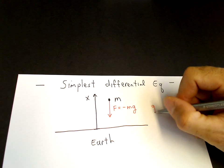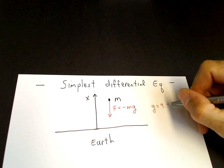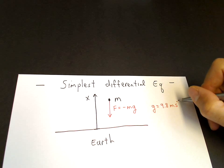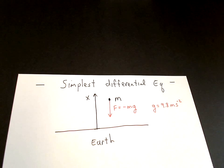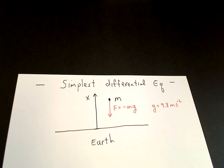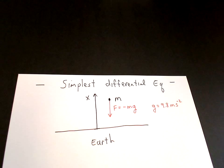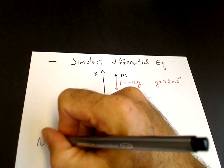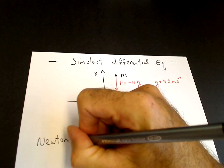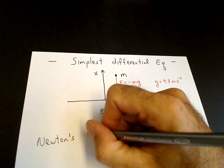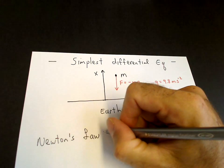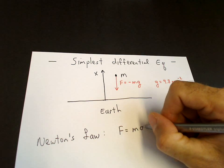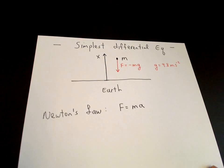So the force gets a minus sign, is equal to minus m times g. g is this constant acceleration which is 9.8 meters per second squared on the surface of the earth. So we write down Newton's law to get our differential equation for the motion of the mass m. Newton's law is force equals mass times acceleration. This is a differential equation.